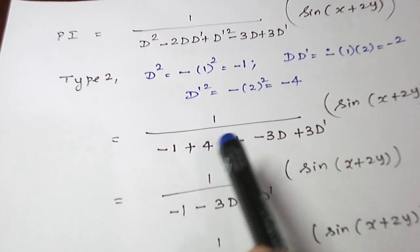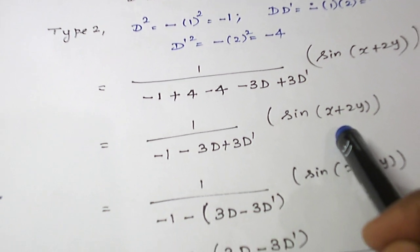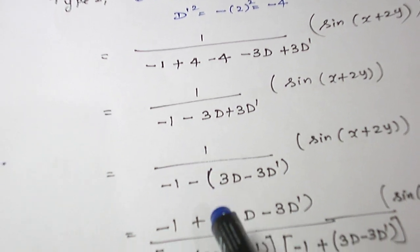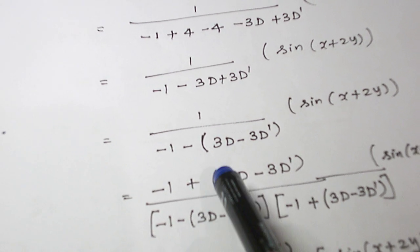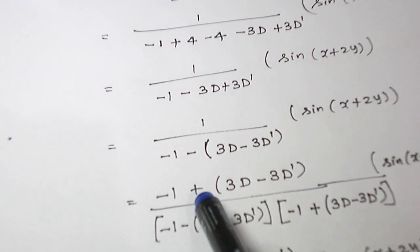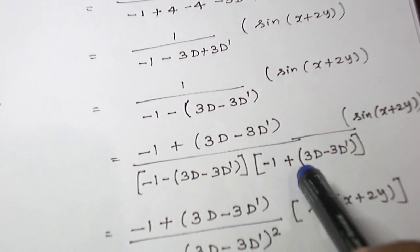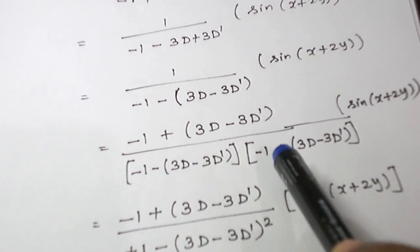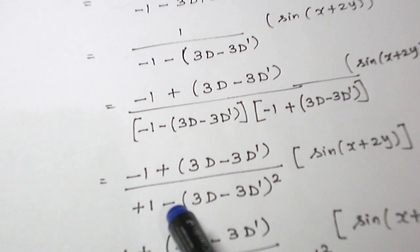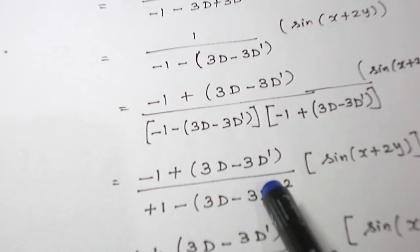And let us take the rationalization process like conjugate. Minus 1 plus 3d minus 3d dash. Multiply and divide. Look at the denominator, it is in the form of a minus b into a plus b, whose product is a square minus b square. Expand this 3d minus 3d dash.